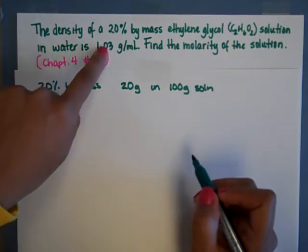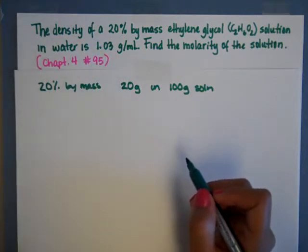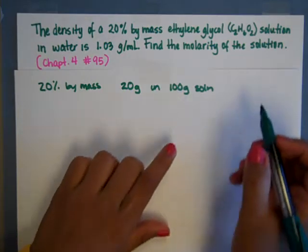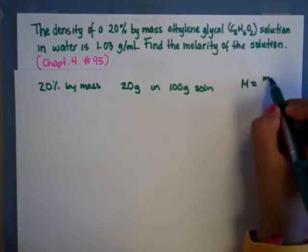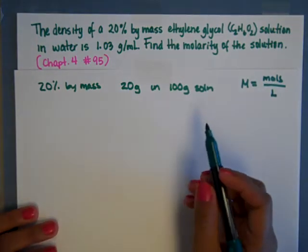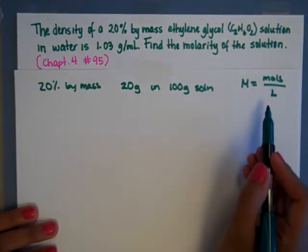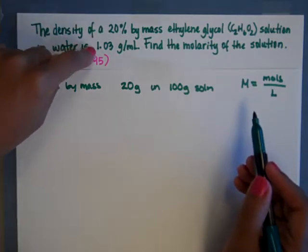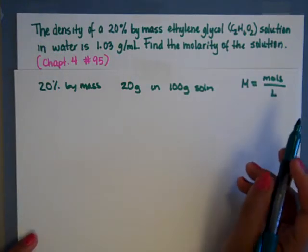Then we have the 1.03 grams per milliliter. That is an important density formula. And at the end, keep in mind, molarity is what we're looking for, is moles over liters. So it's a two-step problem. We're going to have to find moles, and then we're going to have to find liters. And our only two numbers are 20% by mass and 1.03 grams per milliliter.